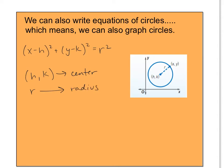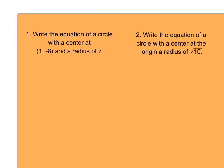I think it's going to be easiest if we just jump right into an example. Number one: write the equation of a circle with a center at (1, negative 8) and a radius of 7. Remember the equation x minus h squared plus y minus k squared equals r squared. This is our h, this is our k, this is our r.